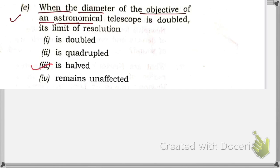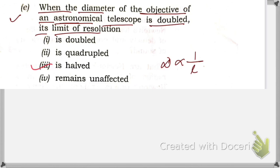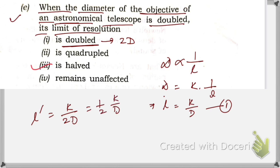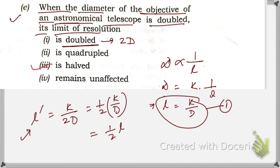When the diameter of the objective of an instrument is increased, what happens to the limit of resolution? The diameter D is inversely proportional to the limit of resolution L, so L = k/D. If the diameter is doubled to 2D, the new limit of resolution becomes k/(2D) = L/2. So the limit of resolution becomes half of the initial value.